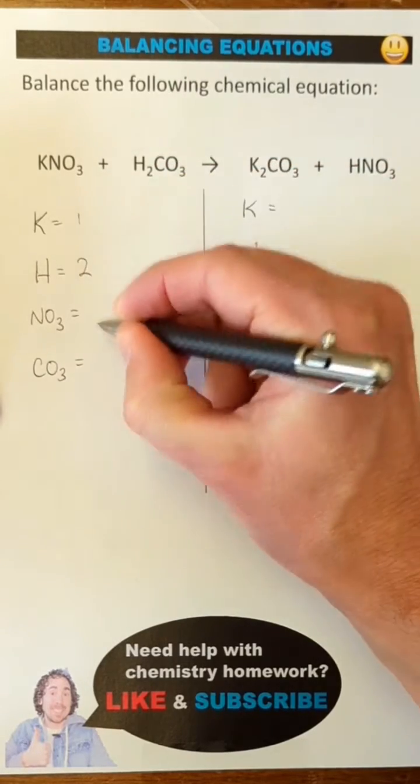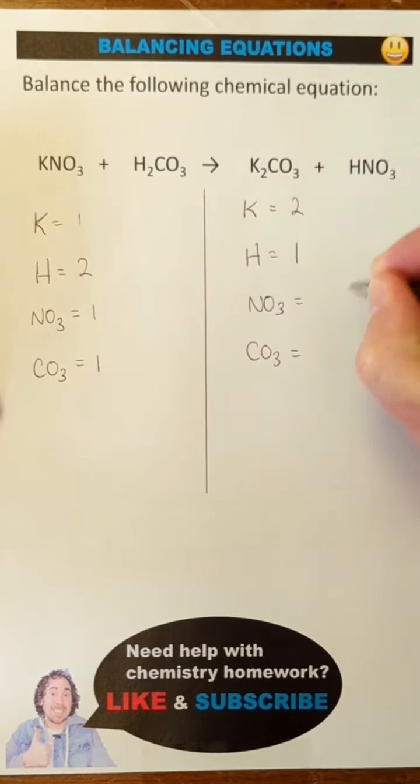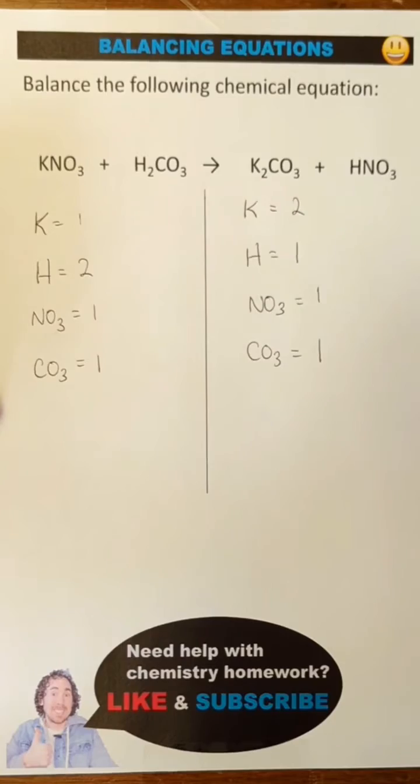There's one potassium, two hydrogens, one nitrate, and one carbonate on the reactant side, and two potassium, one hydrogen, one nitrate, and one carbonate on the product side.